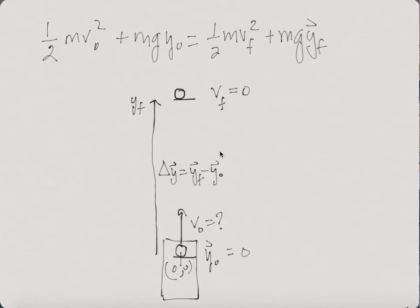Again, we want to calculate initial velocity. So what do we know? Right now, we know that y initial is 0. So this piece just goes to 0. We know that the final velocity is 0. So this piece goes to 0.